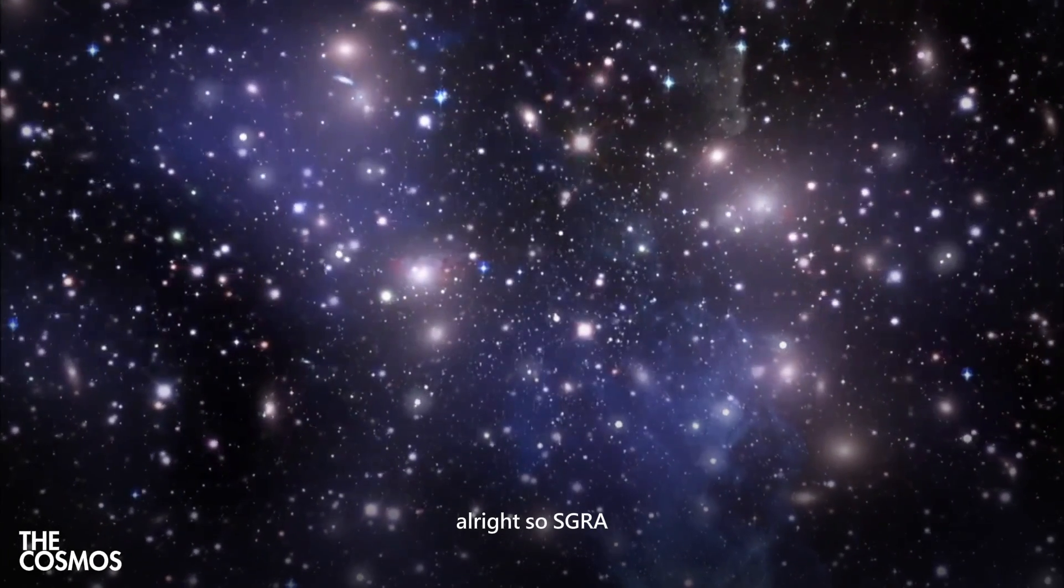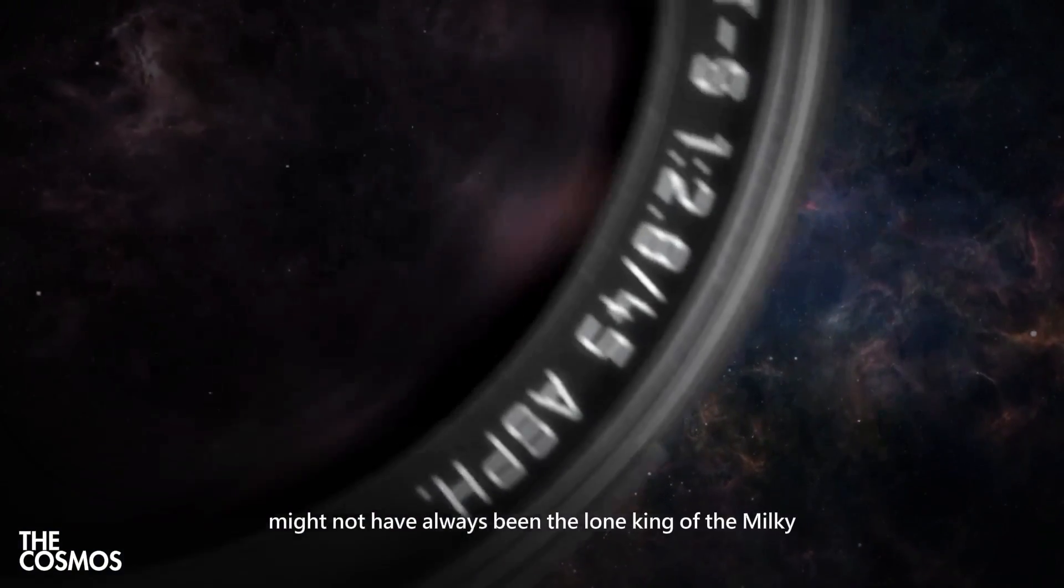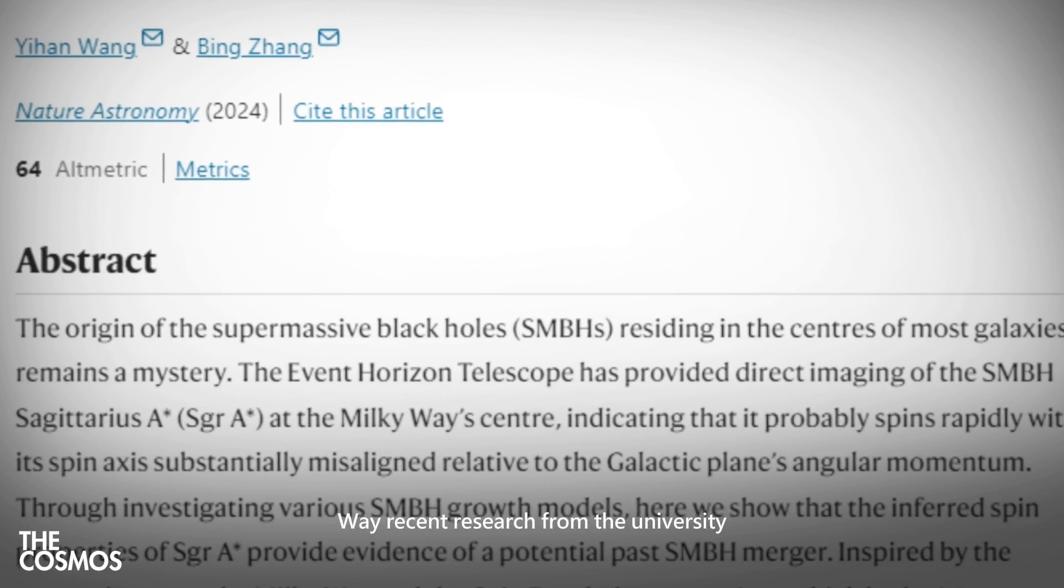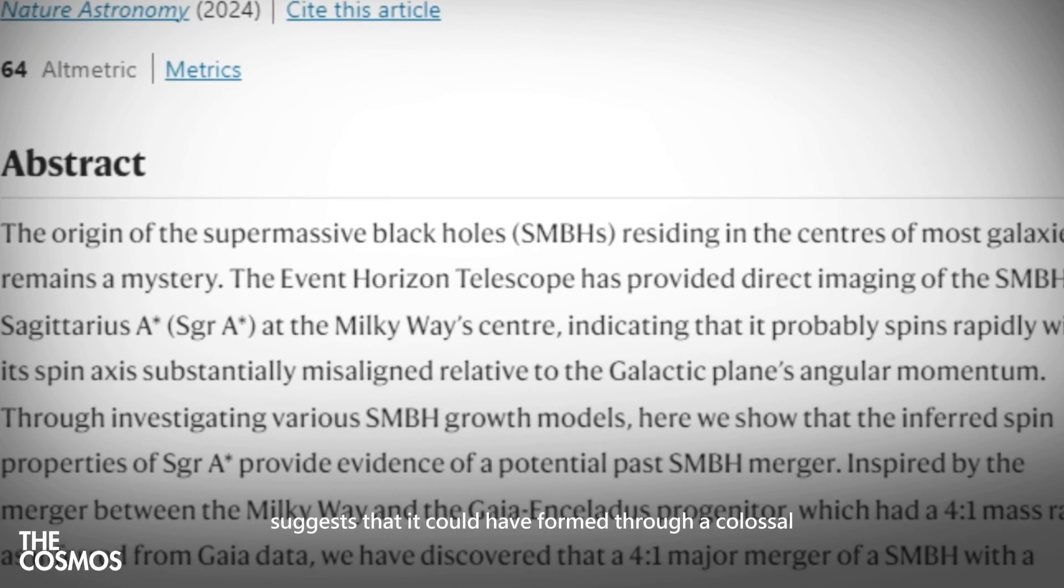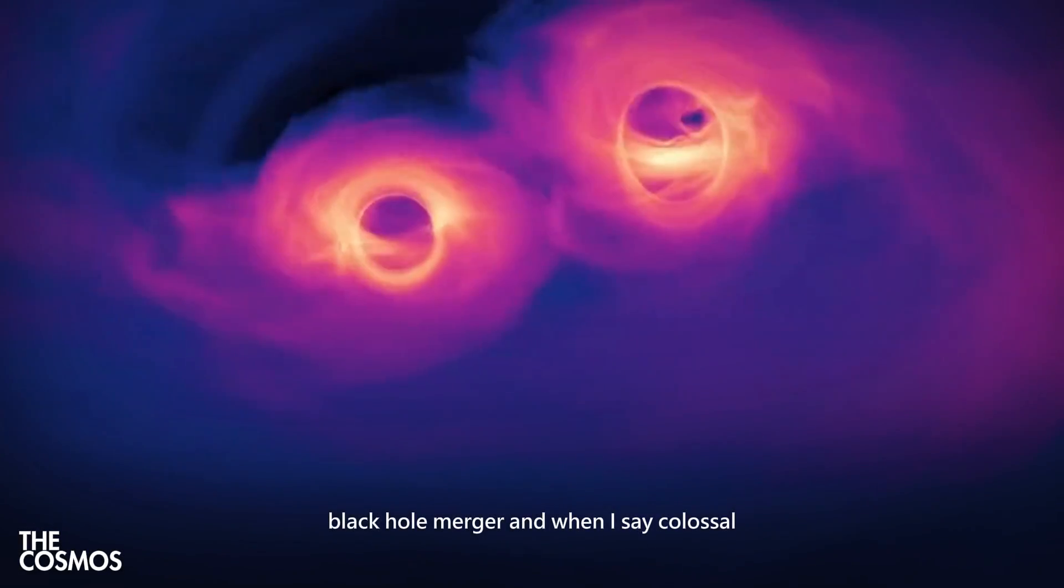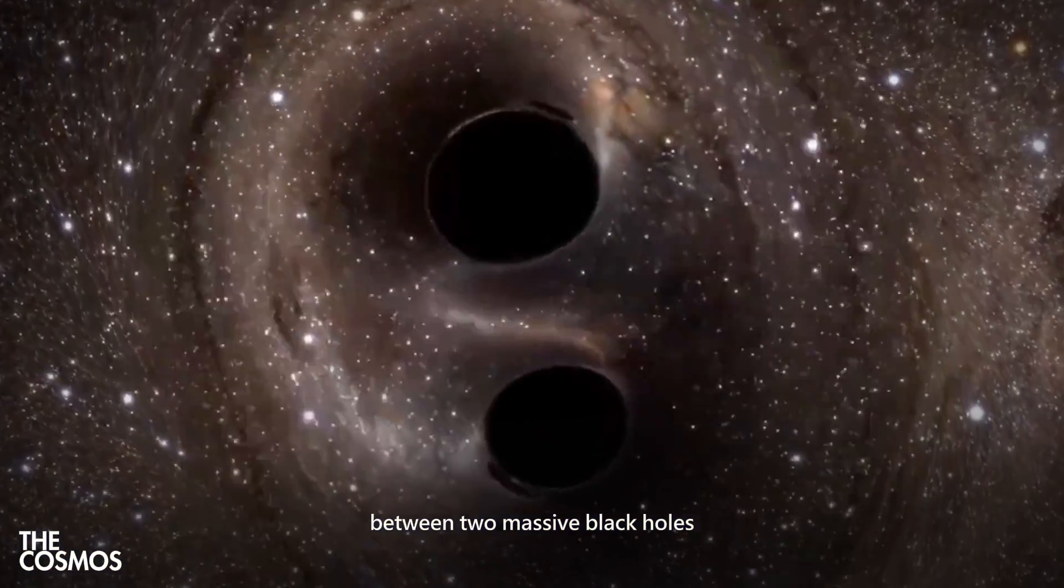Alright, so SGRA, as impressive as it already is, might not have always been the lone king of the Milky Way. Recent research from the University of Nevada suggests that it could have formed through a colossal black hole merger. And when I say colossal, I'm talking about a cosmic collision between two massive black holes.